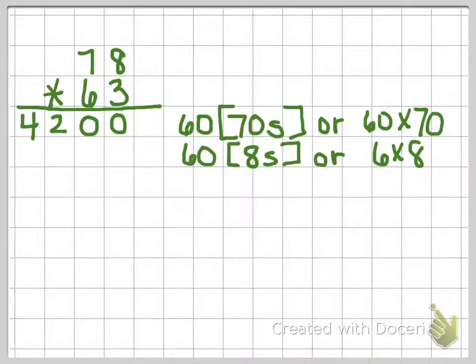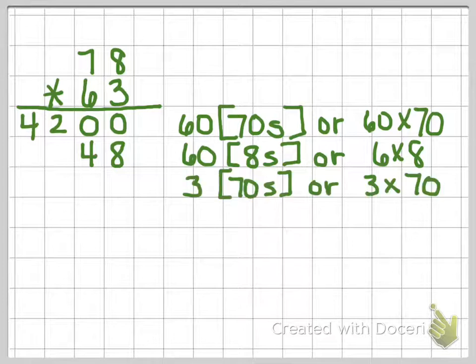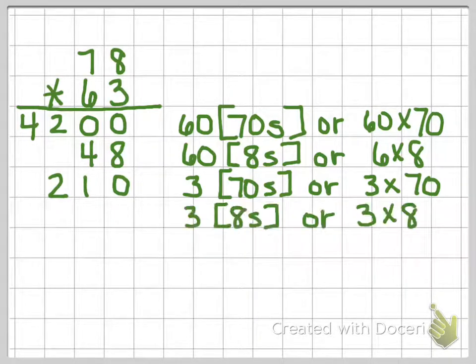And then I have 6 8s, which will be 6 times 8, or 48. And then we are going to move over to that 3, and we are going to have 3 70s, or 3 times 70, which gives me 210. And we have 3 8s, or 3 times 8, which will give me 24.